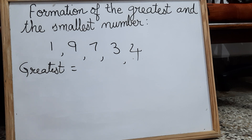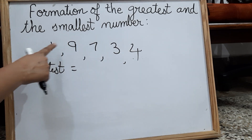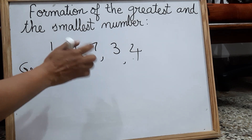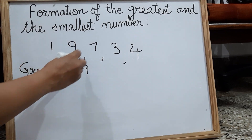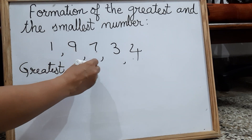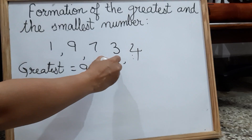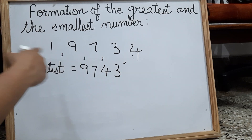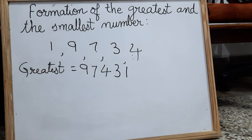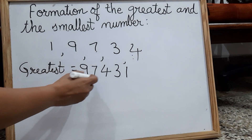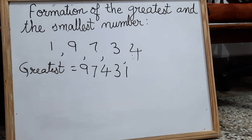For the greatest five digit number, we start with the greatest digit. Out of these five digits, the greatest digit is nine. So we start with nine, then seven, then four, then three, then one — in decreasing order. So we got 97,431 as the greatest number with these five digits.